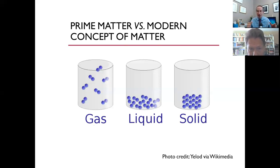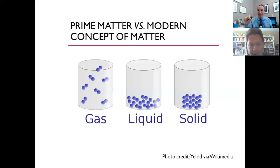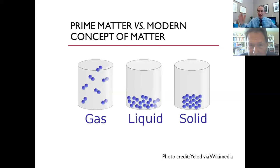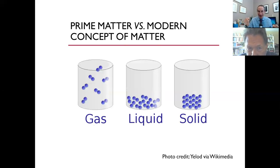If you think about matter — or if you Google matter and look at what image pops up — you get something like this: matter are tiny little things that are very hard, indivisible, and extremely solid. That's what matter is, except if it's dispersed it becomes liquid, and if it's completely dispersed it becomes gas. So our modern concept of matter tends to refer to something that is at some level tangible.